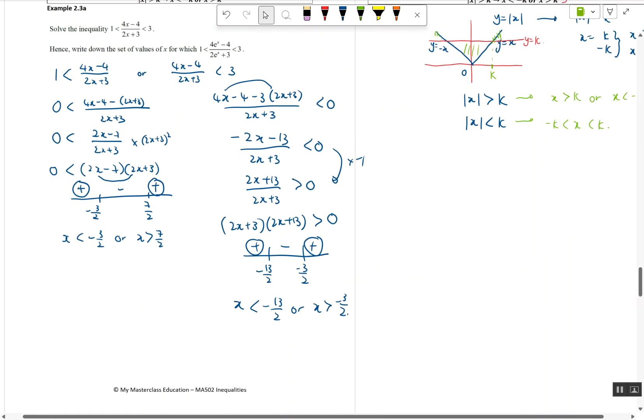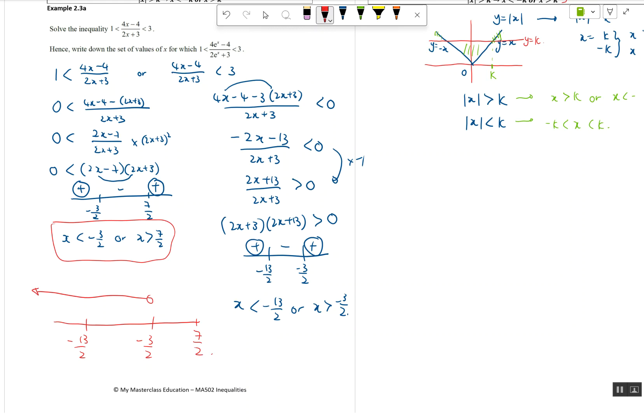So if you combine these two answers into the final answer, let's draw a very big number line for this one. I have negative 13/2, I have negative 3/2, and I have 7/2 as all my roots. So taking this first part, x less than negative 3/2 is here, x greater than 7/2 is here.